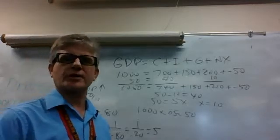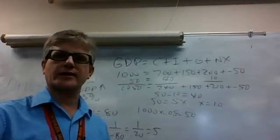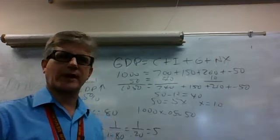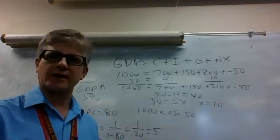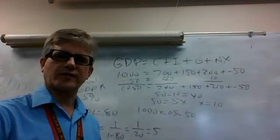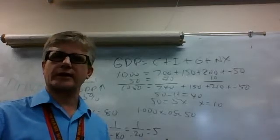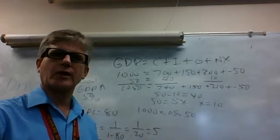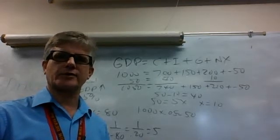We increased GDP by 5% by increasing government spending by $10. And then with the multiplier, we added $40 to C. So the 10 plus 40 equals 50, and we're all good. So we increased GDP by our goal. We did what we wanted to do, and we used it with government spending.